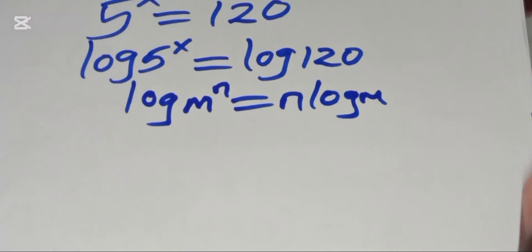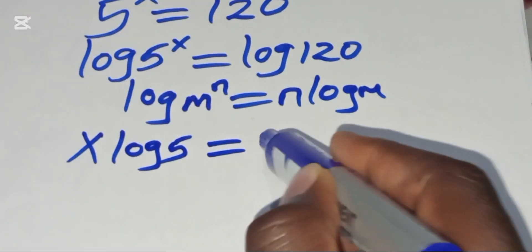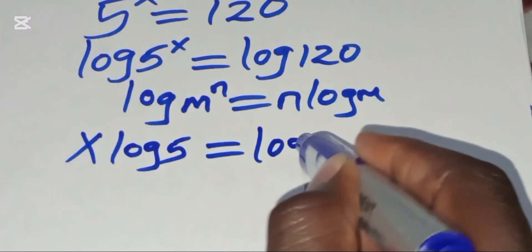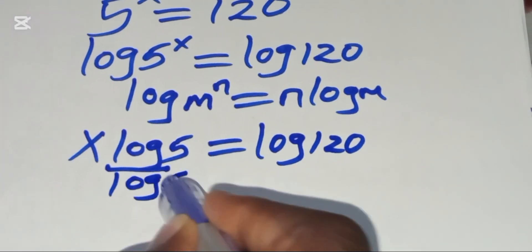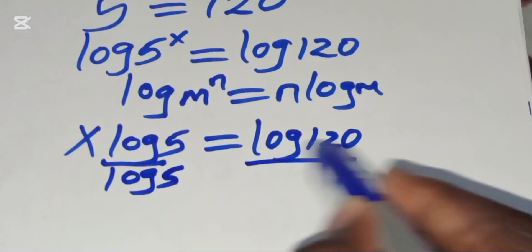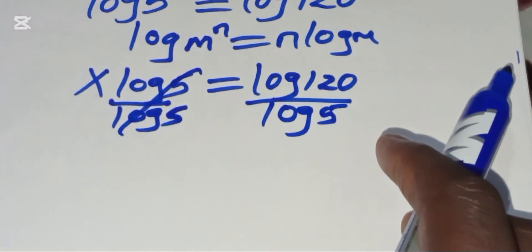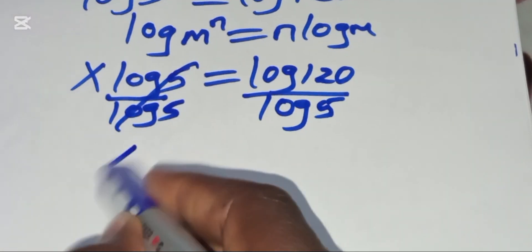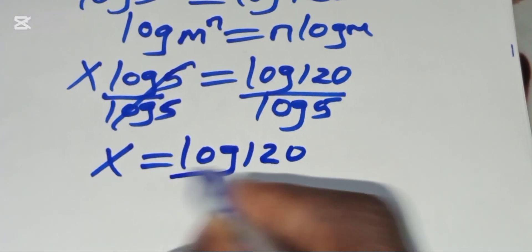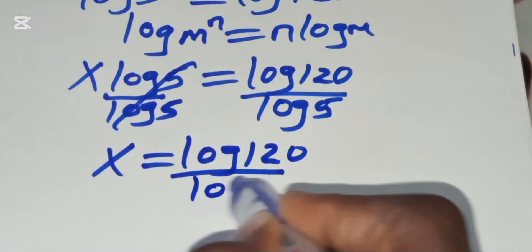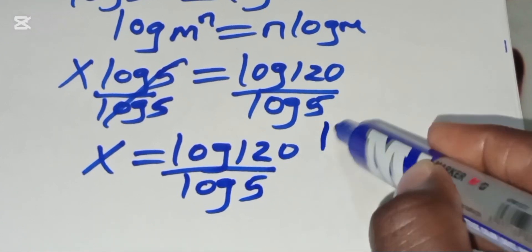So we can express log(5^x) as x·log(5), which equals log(120). We then divide both sides by log(5), giving us x = log(120) / log(5).